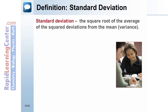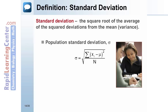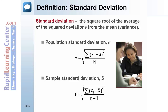The standard deviation is the square root of the average of the squared deviations from the mean, or the variance. Population standard deviation is designated by sigma and equals the square root of the population variance. Sample standard deviation is designated by s and equals the square root of the sample variance.